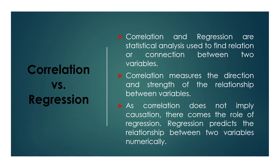Correlation and regression are statistical analyses used to find a relation or connection between two variables. Correlation measures the direction and strength of the relationship between variables. You can check out my other video on correlation — link in the description box. As correlation does not imply causation, which I have discussed in a separate video, that is where regression comes in. For a numerical value of how one variable affects the other, we need regression. Regression predicts the relationship between two variables numerically.